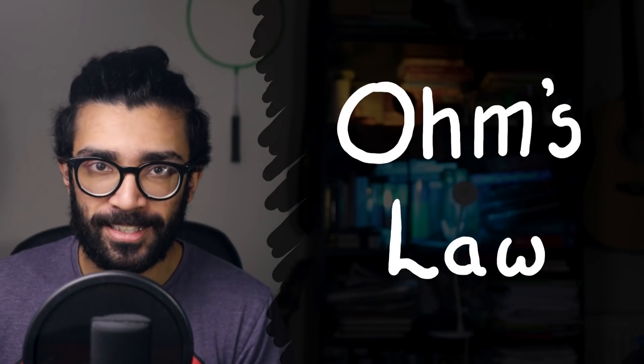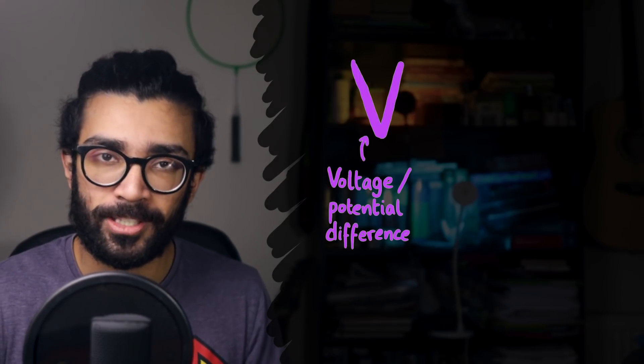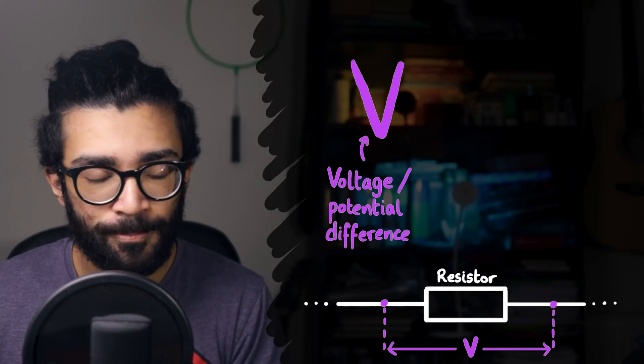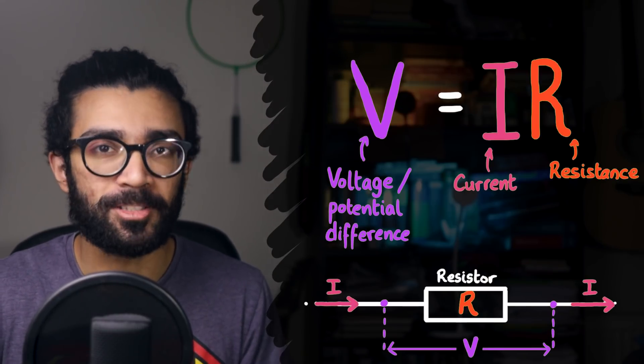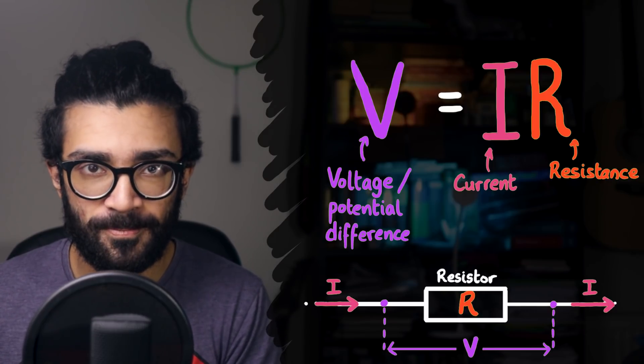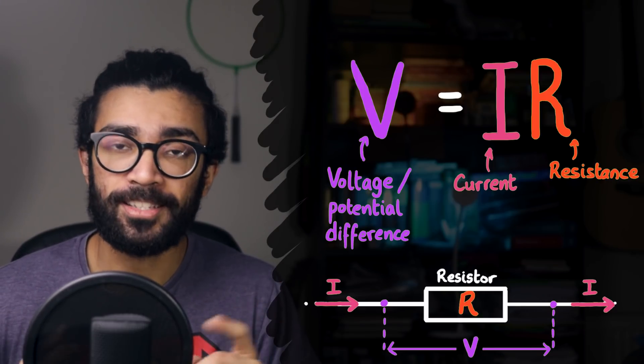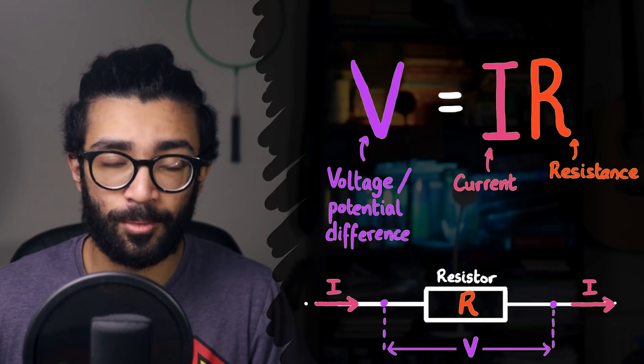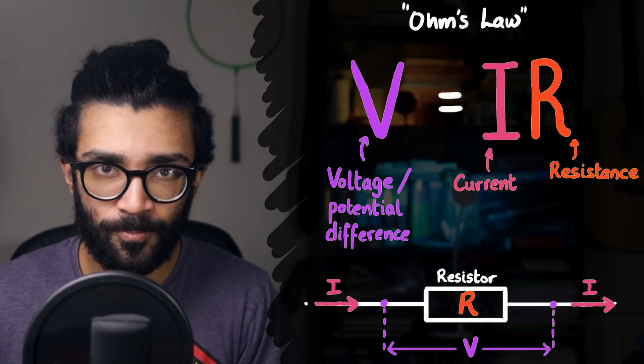Many of us might be familiar with the idea that the voltage or potential difference across a circuit component is equal to the current through that component multiplied by the resistance of the component. And as we've said already, this is the equation that is often quoted when discussing Ohm's law. The problem is, though...